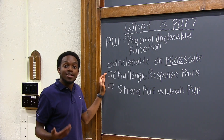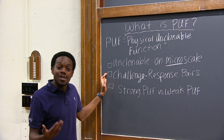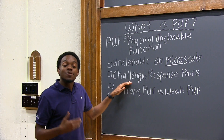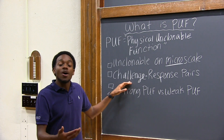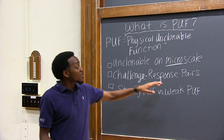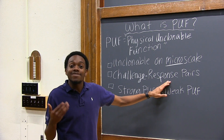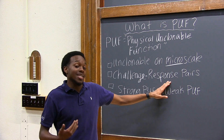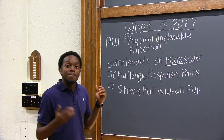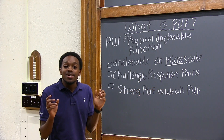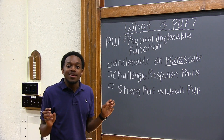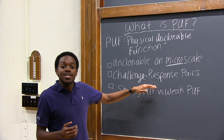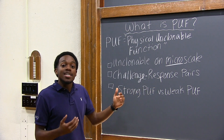Also, PUFs make use of something called challenge-response pairs. A challenge is something that a server sends to a device to authenticate the device, and the response is an answer that a device sends in order to be authenticated. Based upon these minor differences in electrical measurements, these challenge-response pairs are unique to each device.